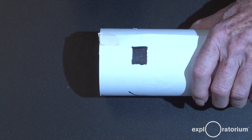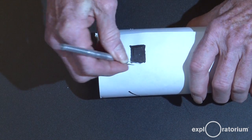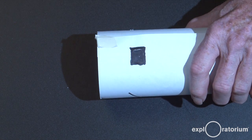To cut the eyepiece, you're going to use the razor knife and you're going to cut all the way through that black square and then poke out the cardboard.